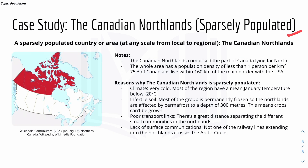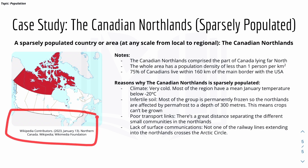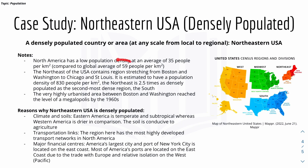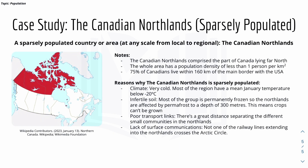Now for the second case study: a sparsely populated area — the Canadian Northlands. Canada lies north of the USA on the map. The Canadian Northlands comprise the far northern part of Canada, and the whole area has a population density of less than 1 person per square kilometer — far below the global average of 59. Notably, 75% of Canadians live within 162 km of the main border with the USA, concentrated in the southern cities.